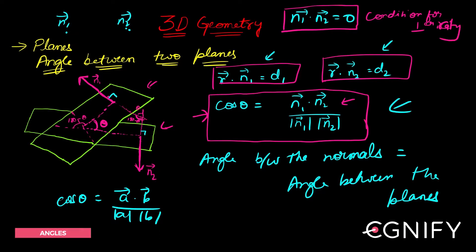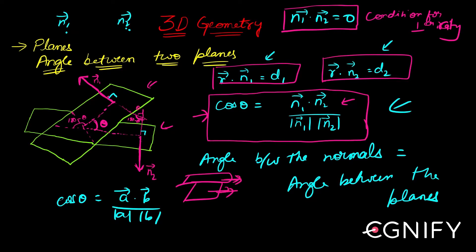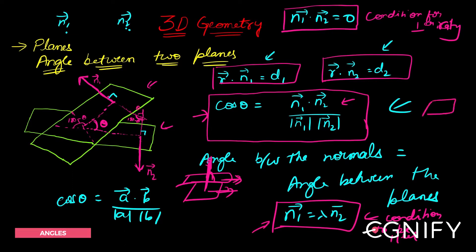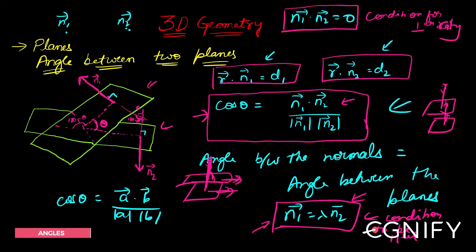Coming to the second case: the condition for parallelism. When can I say that two planes are parallel? That can happen when their direction ratios are in the same ratio — meaning if two planes are parallel to each other, their normals also will be parallel, in the same direction. If two vectors are in the same direction they can be related by some lambda. So the condition is n1 = λn2. This is the condition for parallelism.